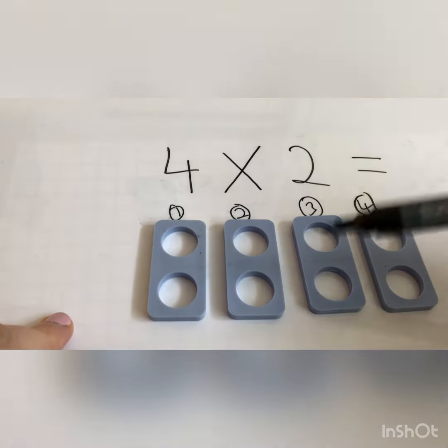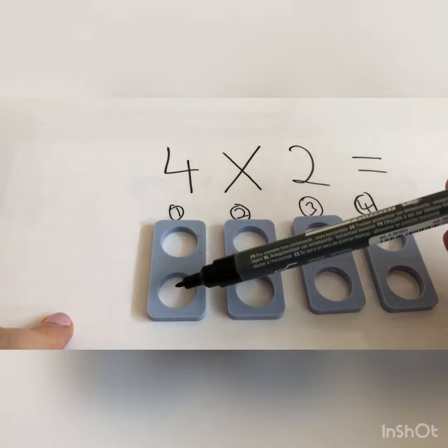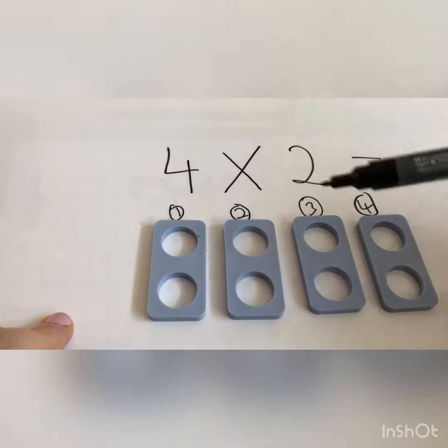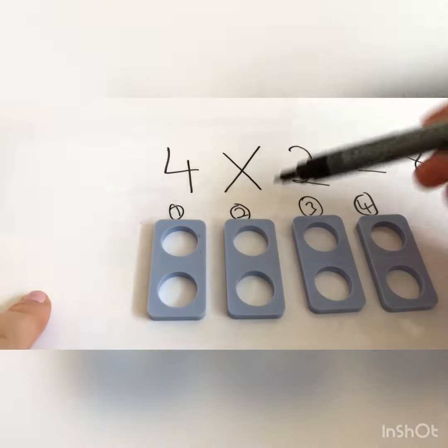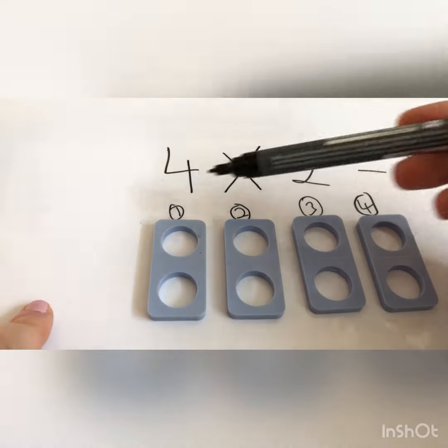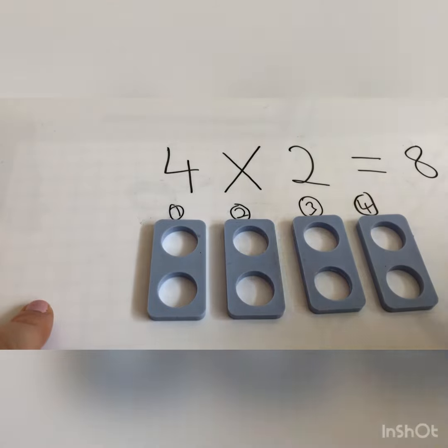Now to get the answer I'm going to add them all together. So I've got two, three, four, five, six, seven, eight. I've got eight all together. So four multiplied by two or four groups of two equals eight.